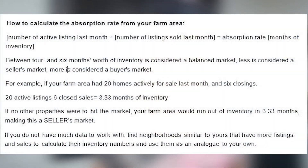For absorption rate, you're going to take the number of active listings last month divided by the number of listings sold last month — and that is the absorption rate, which gives you your months of inventory.